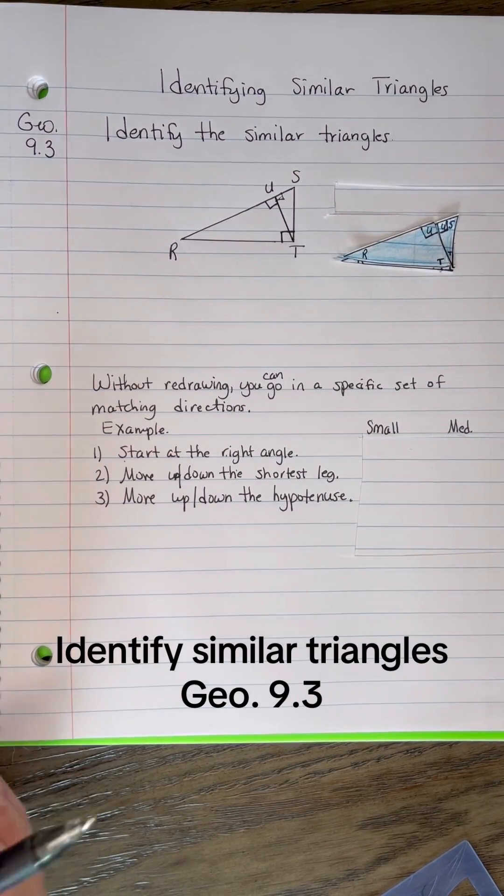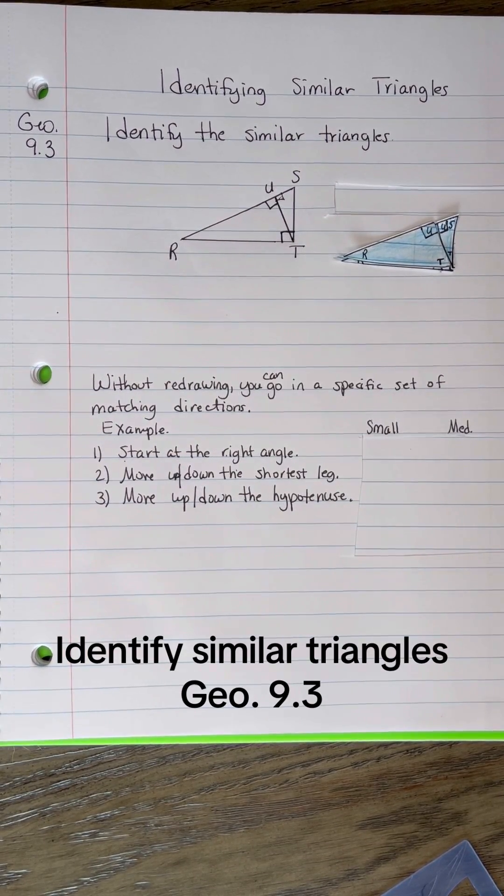All right, we're going to identify similar triangles. There is a theorem called the right triangle similarity theorem.